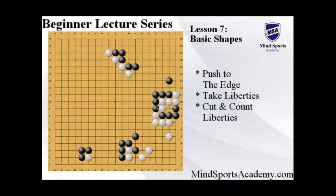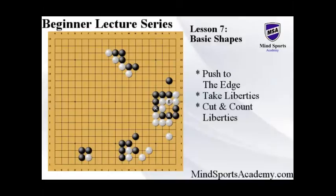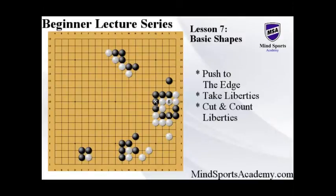Now let's talk about the capturing race. A capturing race is a fight between two groups that are cut off. The A stones here are black stones - they have two liberties and they're not connected diagonally. This black group is dying, and at the same time this white group is also cut off and dying with only two liberties. When you realize both sides are cut off, it's very important to count exactly how many liberties both sides have. In this case black has two and white has two, so whoever takes the liberty first will win the capturing race.